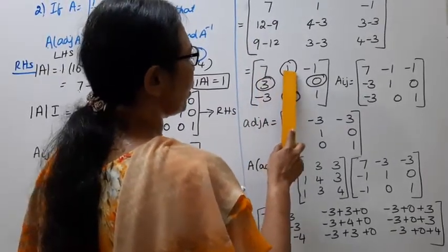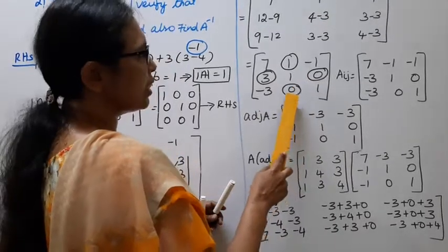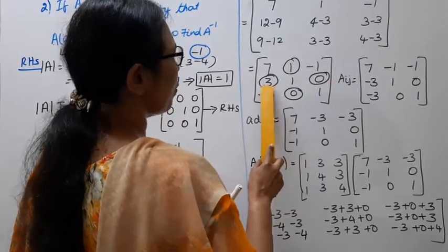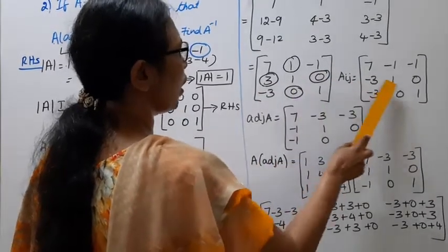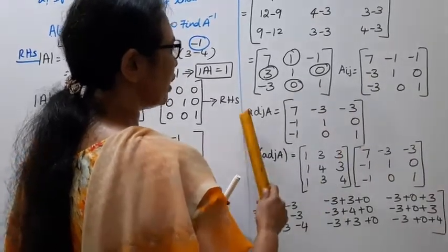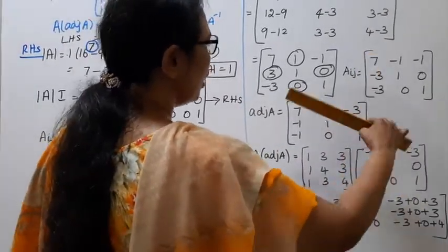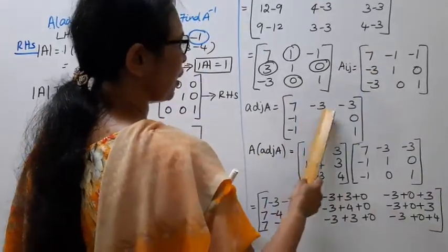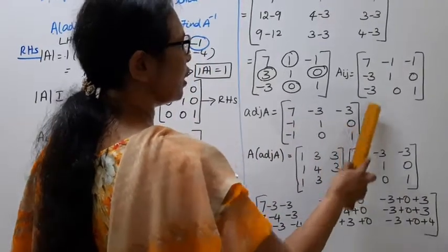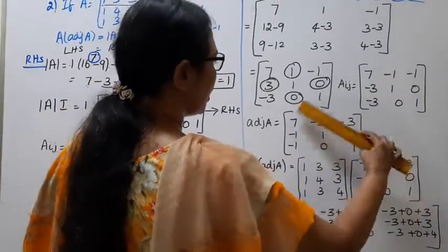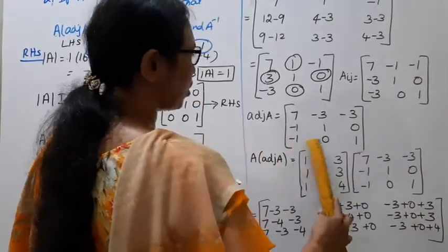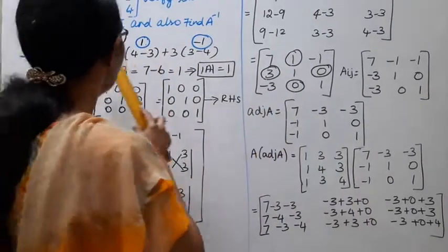After applying sign changes, the co-factor matrix gives adjoint A as: [7, minus 3, minus 3; minus 1, 1, 0; minus 1, 0, 1]. This column-to-row transposition gives us the adjoint matrix on the left hand side.